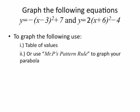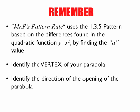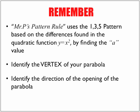We're looking at the vertex form where we have a vertex of h and k that is not considered 0, k or h and 0 as we've seen in the previous chapter. So we're going to graph the following equations: y equals negative (x minus 3) squared plus 7, and y equals 2(x plus 6) squared minus 4. To graph the following, use table of values or use Mr. P's pattern rule to graph your parabola. Now, in order to be able to use Mr. P's pattern rule for graphing parabolas, you need to be able to identify the vertex and the a value. Once we know what the vertex is and we find what the a value is, we can use the 1-3-5 pattern rule to help us graph our parabola. Once we find our a value, it will also help us identify the direction of the opening of the parabola.